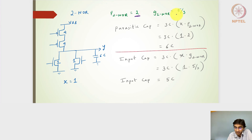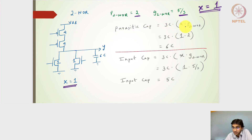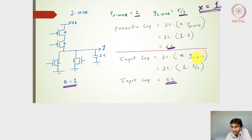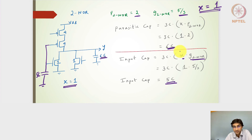Now for the 2-input NOR gate: parasitic factor is 2, logical effort is 5/3, and x = 1 because gate size 5 gives output current the same as the 2-to-1 inverter. The parasitic capacitance is 3C × 1 × 2 = 6C, and the input capacitance is 3C × (5/3) × 1 = 5C. Validating from the circuit: the size-4-and-1-and-1 configuration gives parasitic 6C and connecting the two inputs gives input capacitance 5C — both validated.